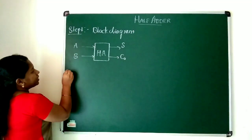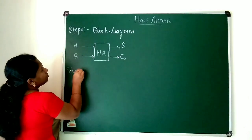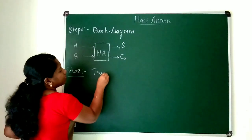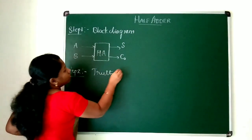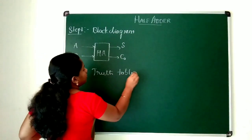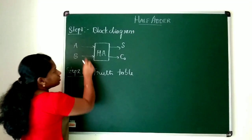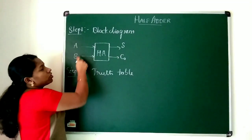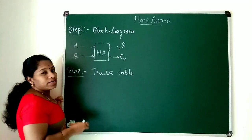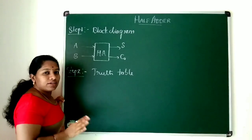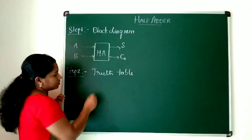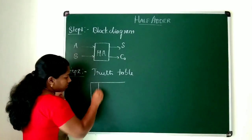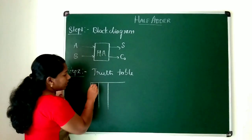The next step is to write the truth table. To write the truth table, you need to consider the number of inputs. Here we have two inputs, so we get 2² = 4 combinations. I will be writing a truth table of four combinations.